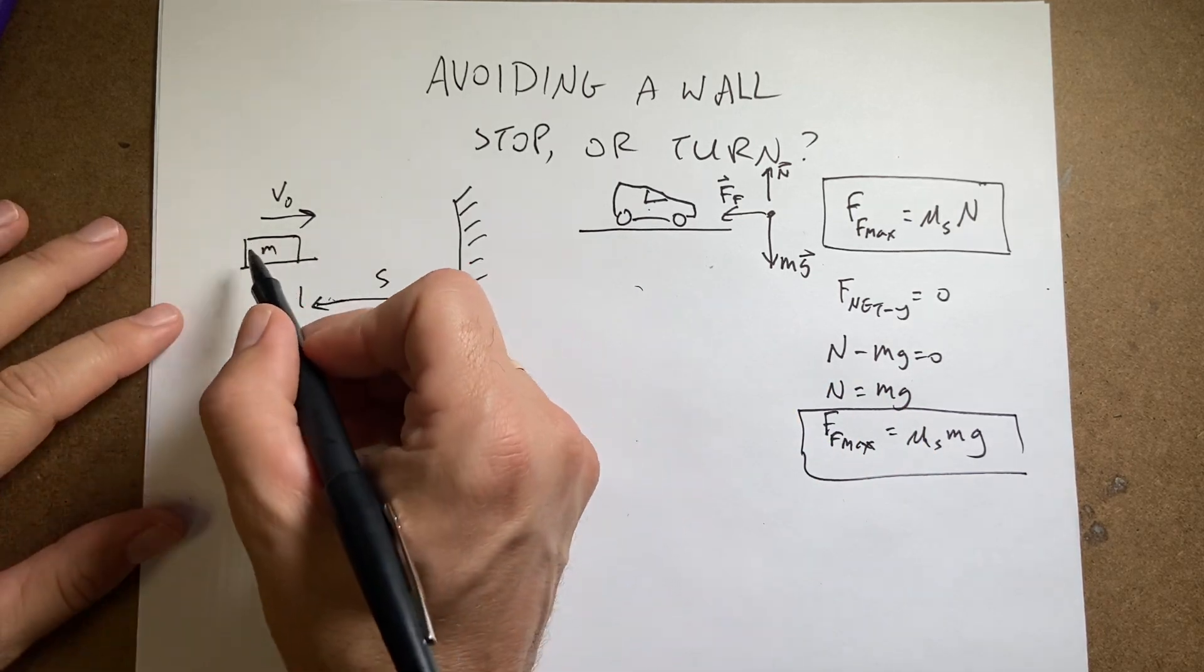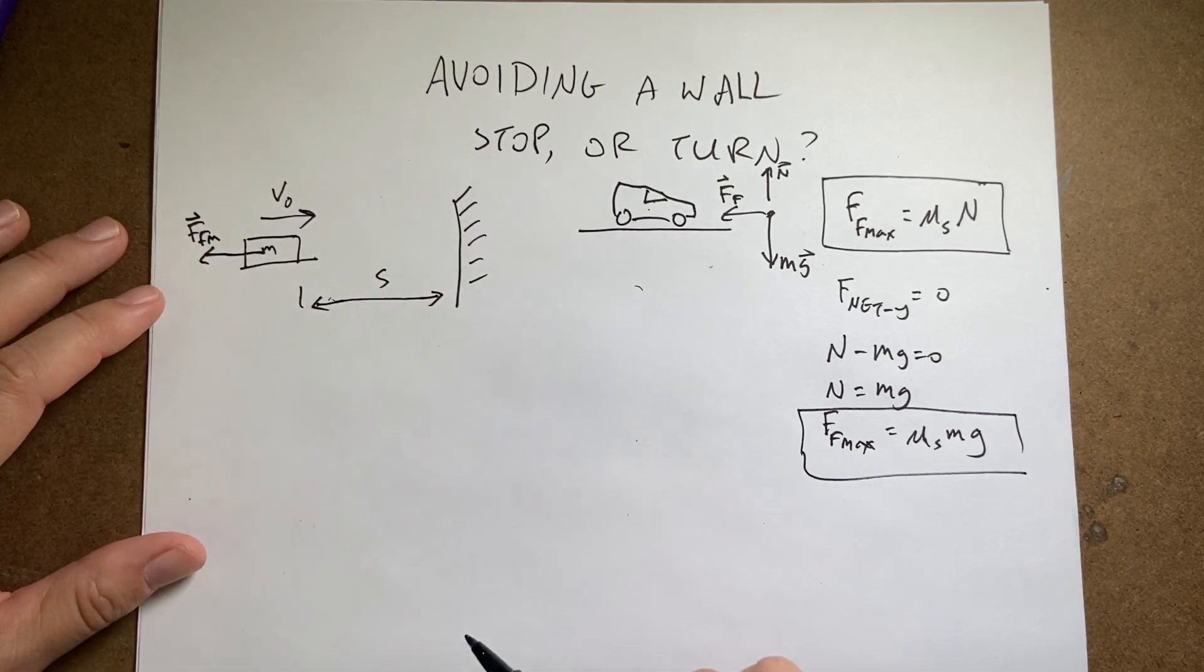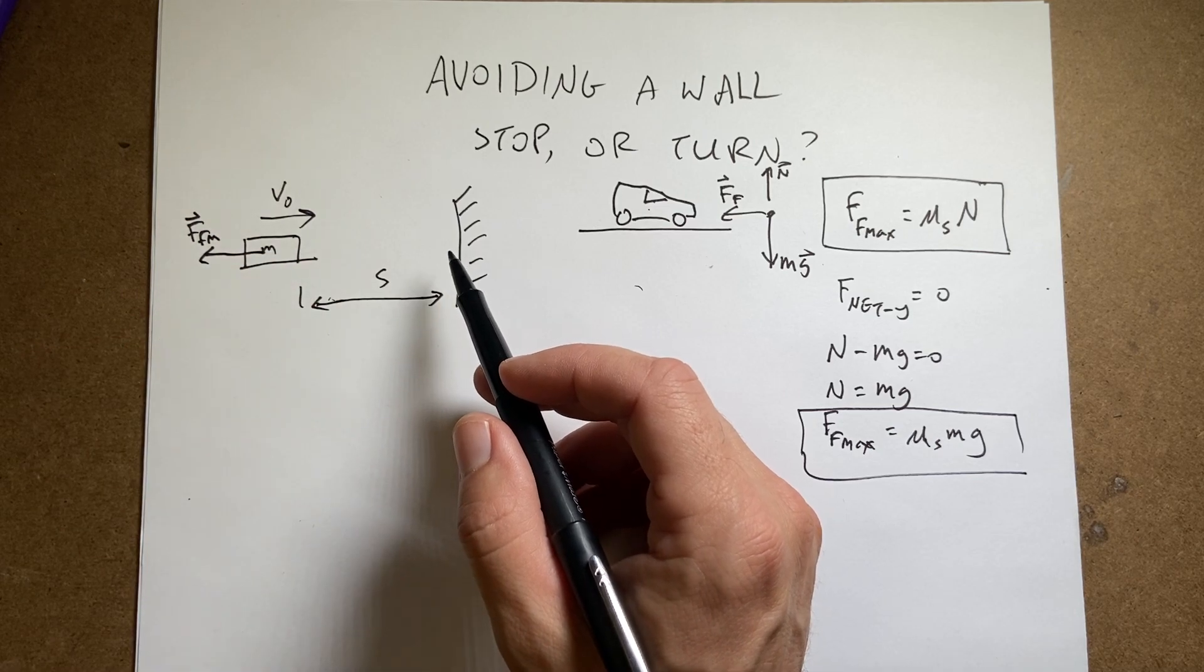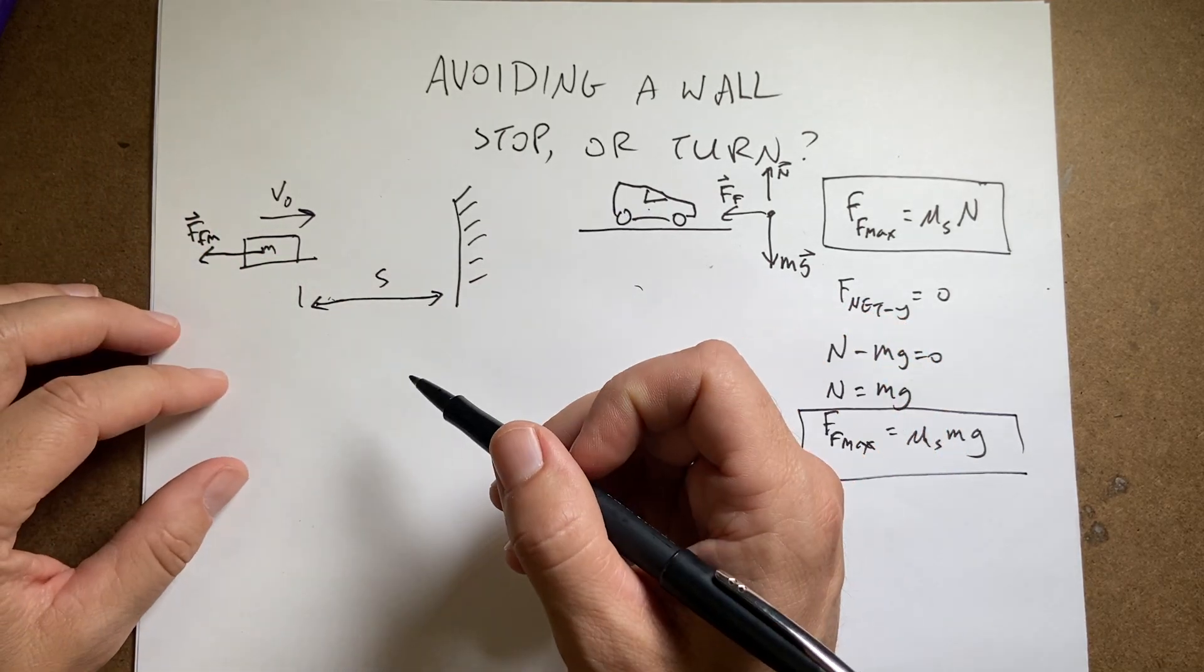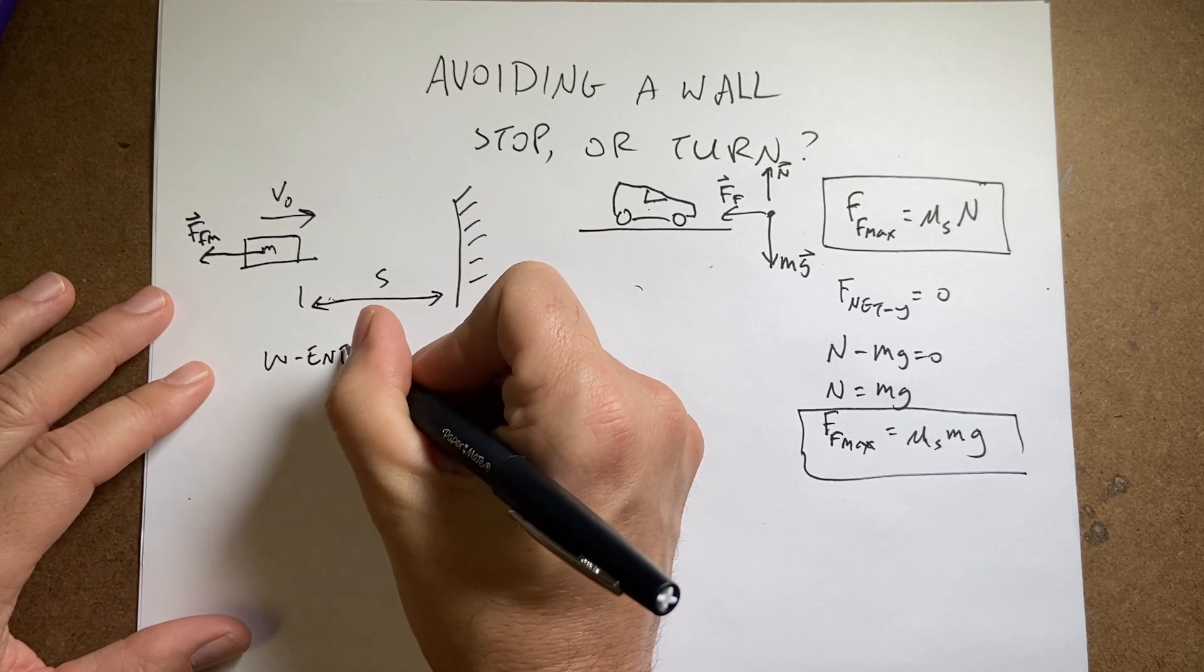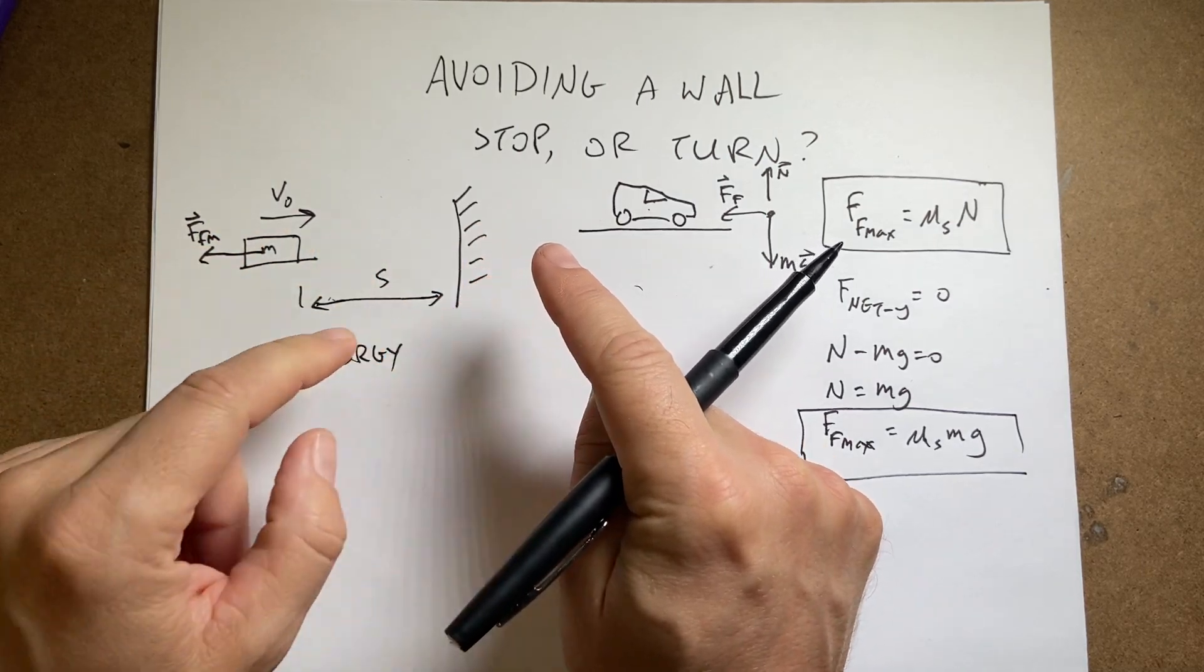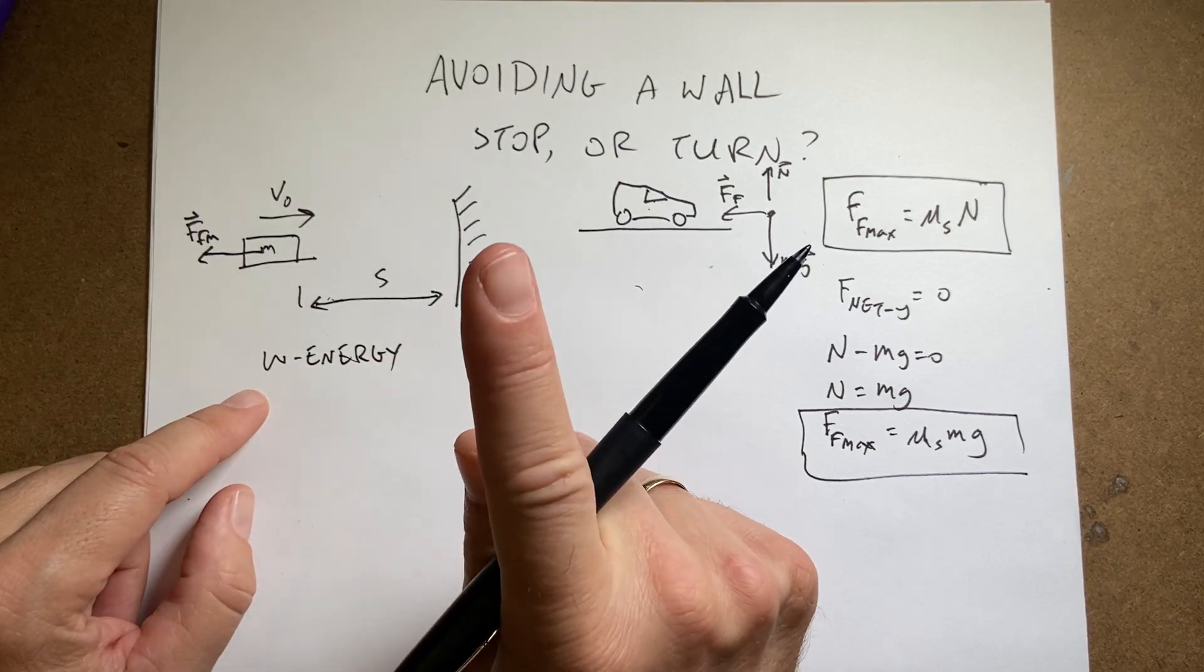Okay, so now back over here, I only have that one force from the top, the max friction force pushing backwards. Now, how do I find the distance that this force would have to apply to stop the car? So there's a lot of ways you could do this. I could solve for the acceleration of the car and then use kinematic equations. But, I want to use work energy.